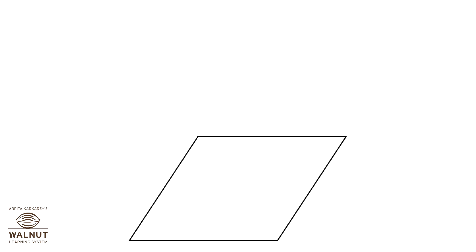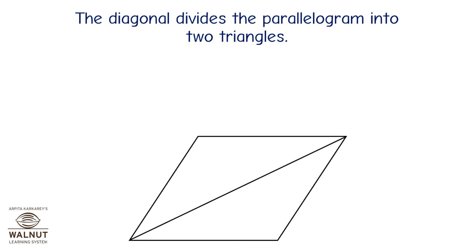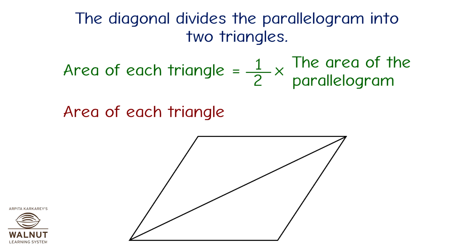Now let's draw a diagonal to this parallelogram. The diagonal divides the parallelogram into two triangles again. These are two equal triangles. So the area of each is half the area of the parallelogram. So area of the triangle is equal to half into base into height.